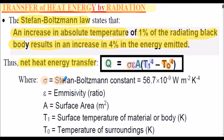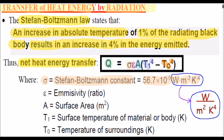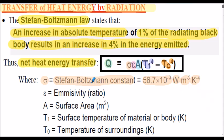Here's the nomenclature. Lowercase sigma is the Stefan-Boltzmann constant, 56.7 times 10 to the negative 9, having the unit of watt metre negative 2, Kelvin K negative 4. Note that can be written in this format also. Lowercase epsilon is the emissivity — we'll define that on the next slide. A is the surface area of our material or body, in metre squared.